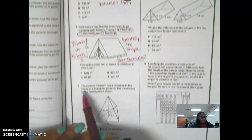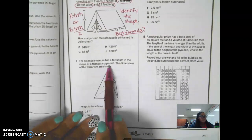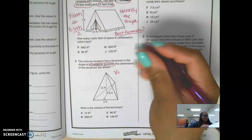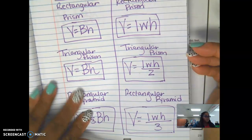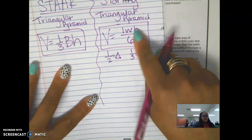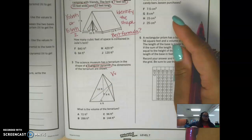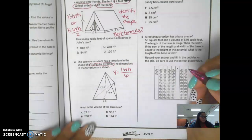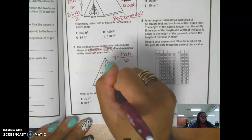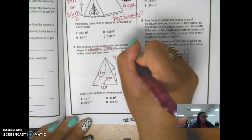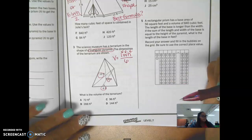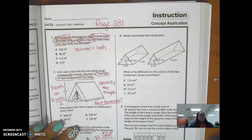Number three: the science museum has a terrarium in the shape of a triangular pyramid. For a triangular pyramid, the formula is length times width times height divided by six. I'm going to plug in the three numbers — the order doesn't matter because you're multiplying — and then divide by six.